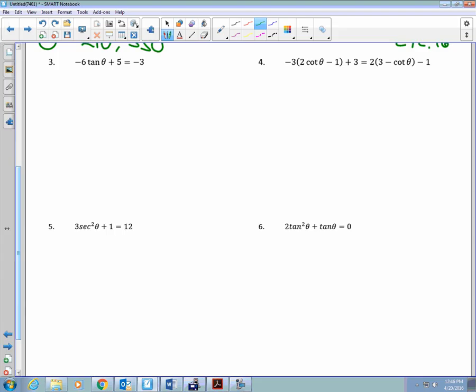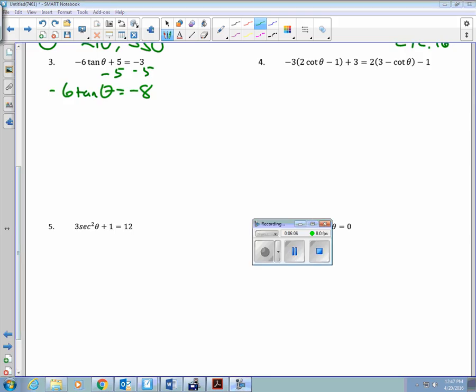-6tan(θ) + 5 = -3. Subtract 5. -6tan(θ) = -8. You take it away from there. Go ahead. Solve the rest. Nope, tangent is positive here. It's positive 4 thirds. Yep. It's always from the x-axis, never from the y-axis. Every time from the x-axis.